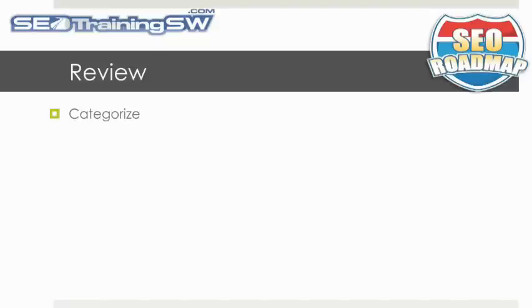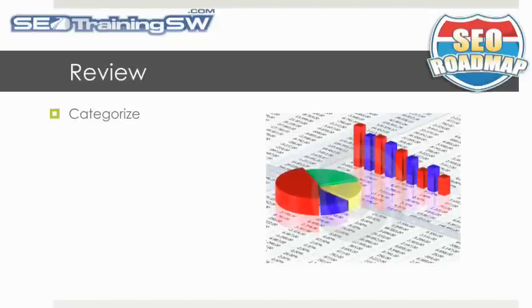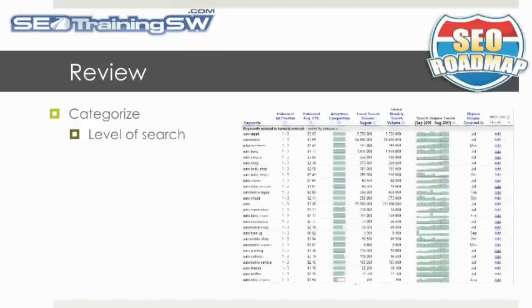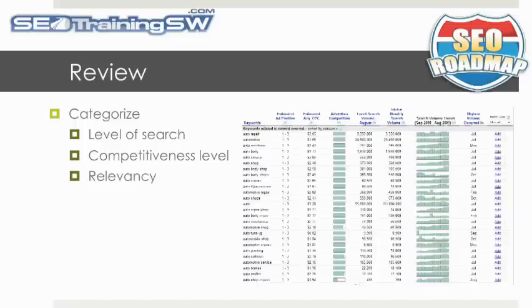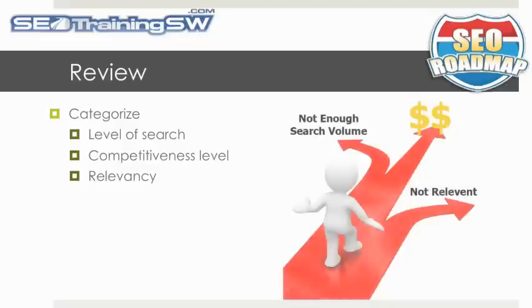In the review phase, we'll be compiling our list of keywords into a spreadsheet, then sorting them and categorizing them. The level of search will tell us how frequently people are searching for that keyword on a daily or monthly basis. The competitiveness level tells us how many other web pages are competing for that same keyword phrase. And then there's the relevancy to your website. You'll discover in this phase that many keywords are just not worth the time or effort to target because they may not have enough search volume, or the competition is through the roof, and there are more profitable long-tail keywords you could target instead.